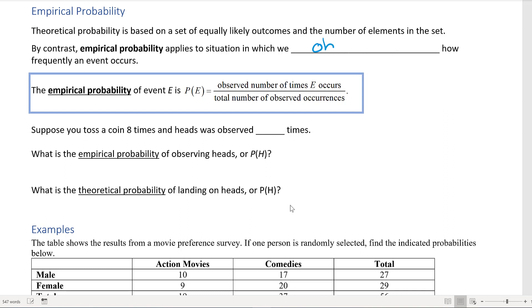By contrast, empirical probability applies to a situation where we actually observe how frequently an event occurs. The empirical probability of an event E is P(E) equals the observed number of times E occurs divided by the total number of observed occurrences.